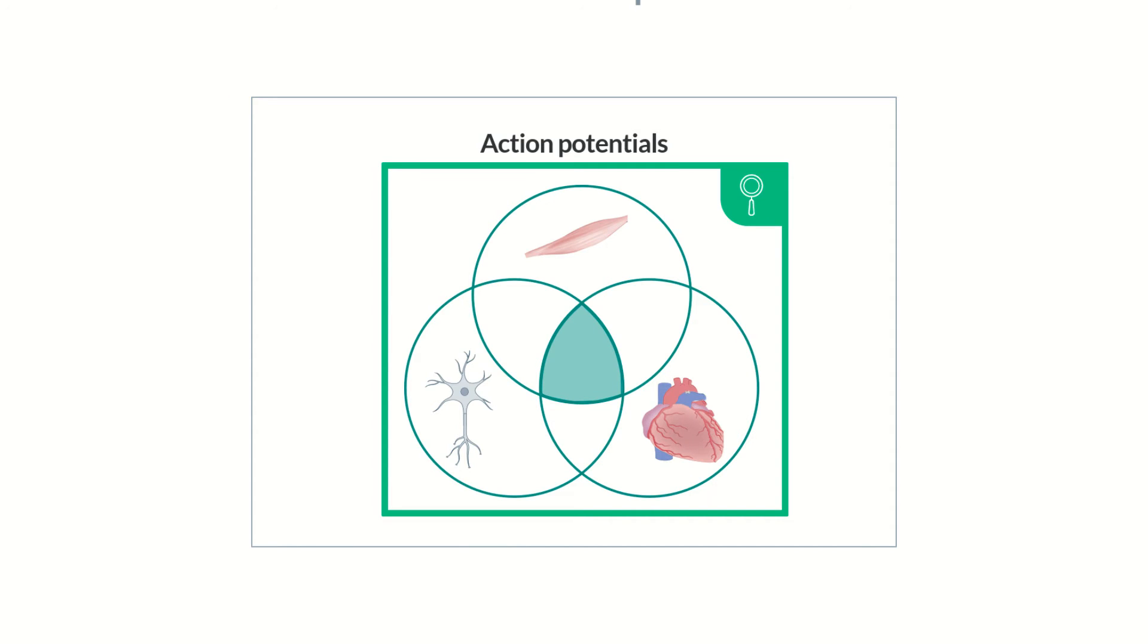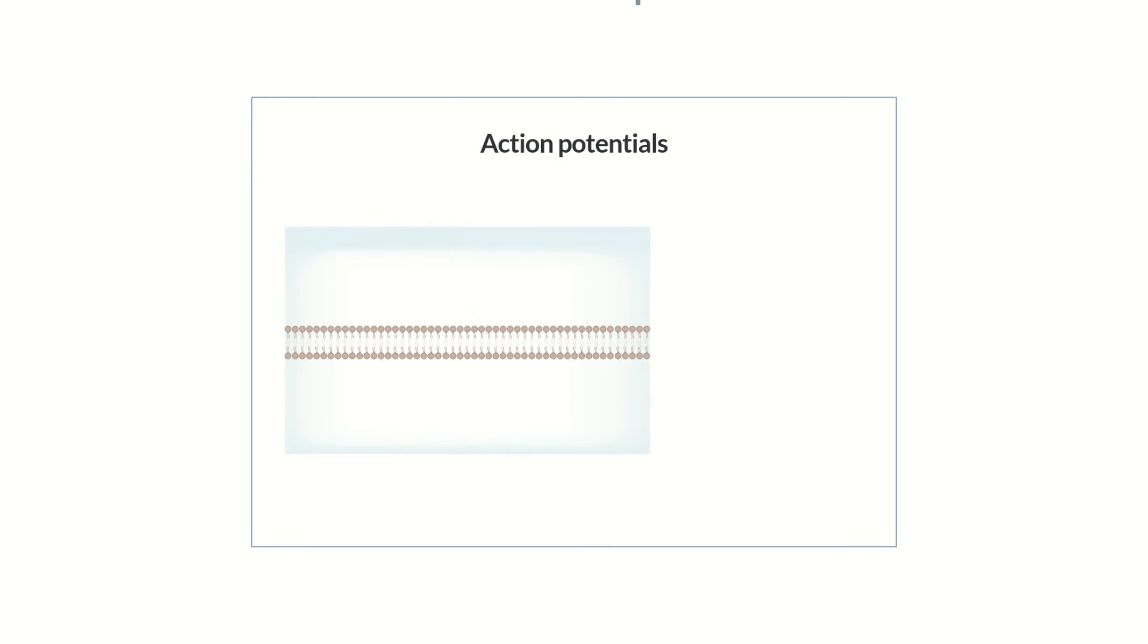Let's start with looking at how an action potential is generated. The cell membrane separates the cell interior from the exterior environment, which have different soluble components. The intracellular fluid contains negatively charged proteins as well as positively charged potassium ions and protons.